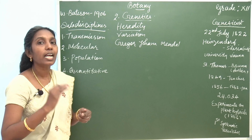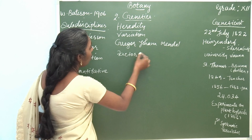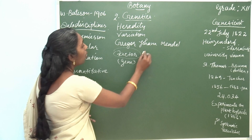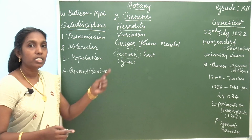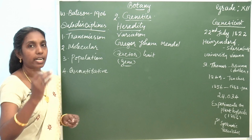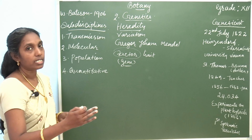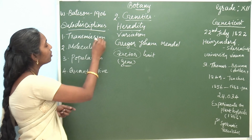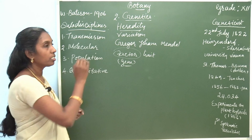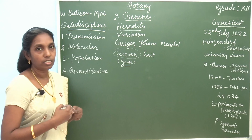Transmission genetics: the word 'character' is represented as a factor, or it is a gene. In Mendelian genetics we use the word factor or trait. These traits and characters are located within the chromosome in the form of genes. Transmission genetics deals with how the characters — genes — are transmitted from generation to generation.